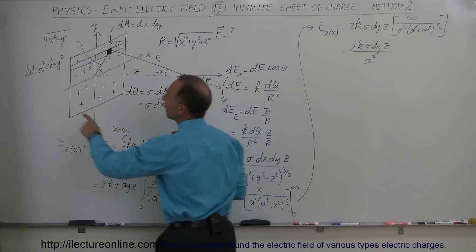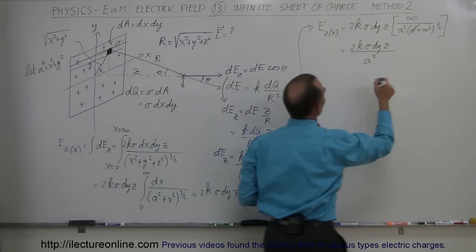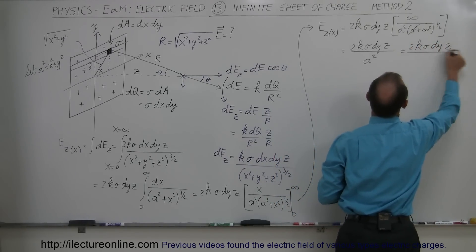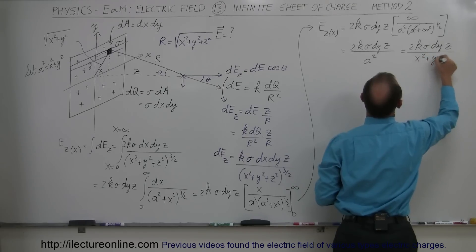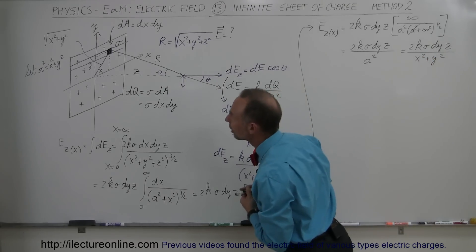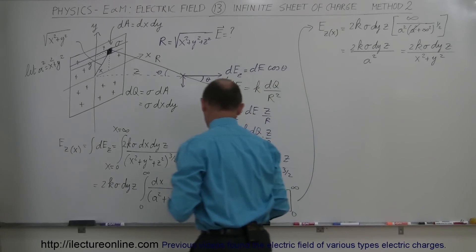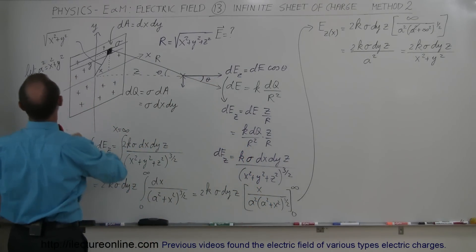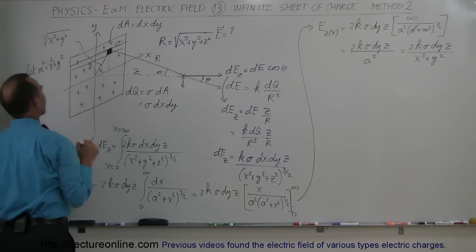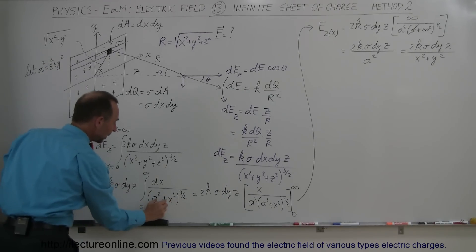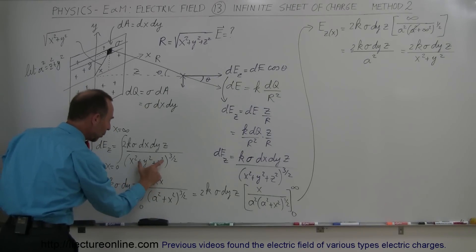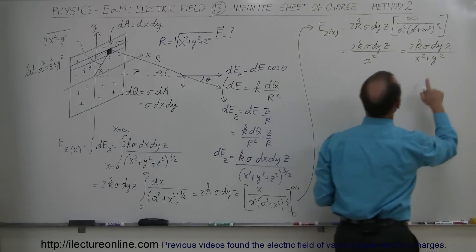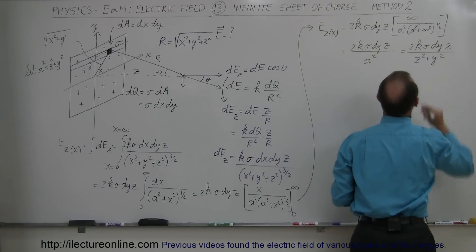Substituting back, a² = y² + z², so the result of integrating in the x direction is 2k sigma dy times z over (y² + z²).